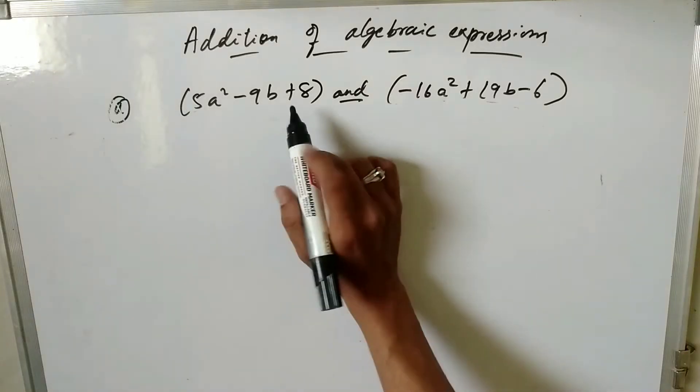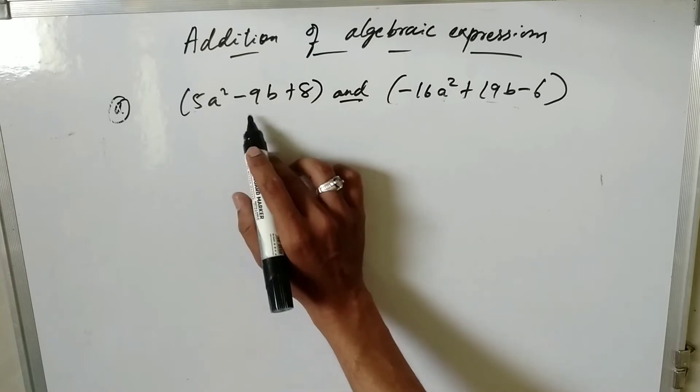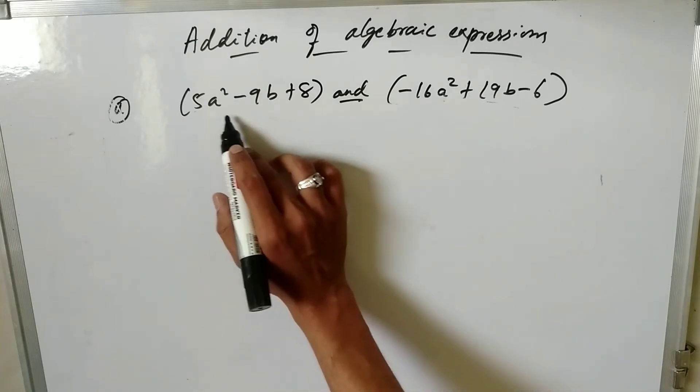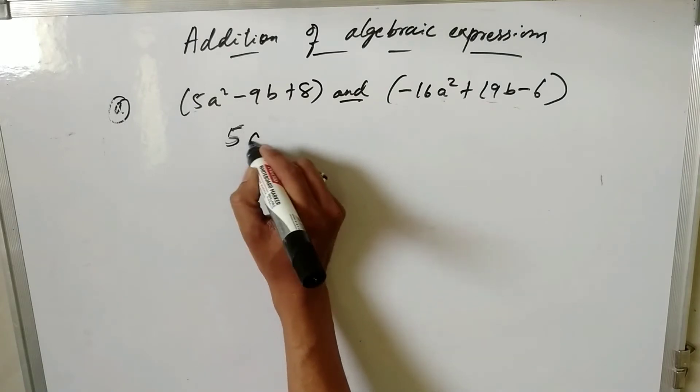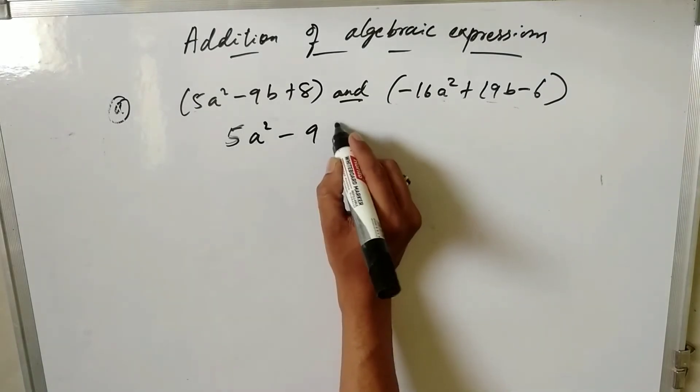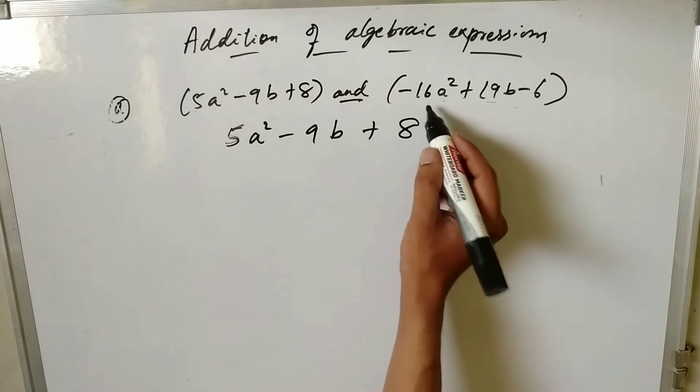Hello students, today we are going to see the addition of algebraic expressions. We are given the question with two algebraic expressions. Let us write this: 5a² - 9b + 8. So we will write the second number below this number to add.